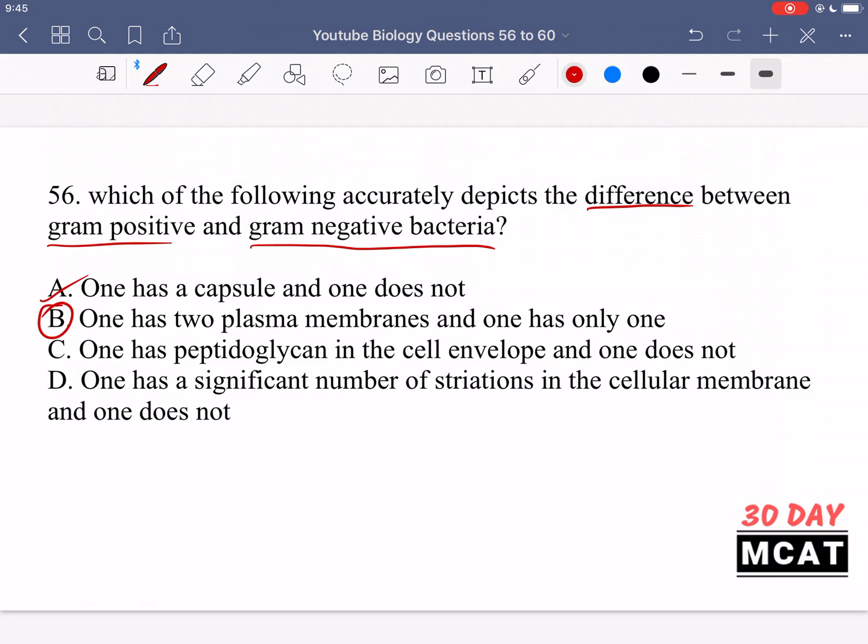Option C says one has peptidoglycan in the cell envelope and one does not. That's incorrect - both actually have it present but in different amounts, so that's not a correct difference. Option D says one has a significant number of striations in the cellular membrane and one does not. This isn't really a clearly defined difference between gram-positive and negative bacteria, so this is not a correct answer.